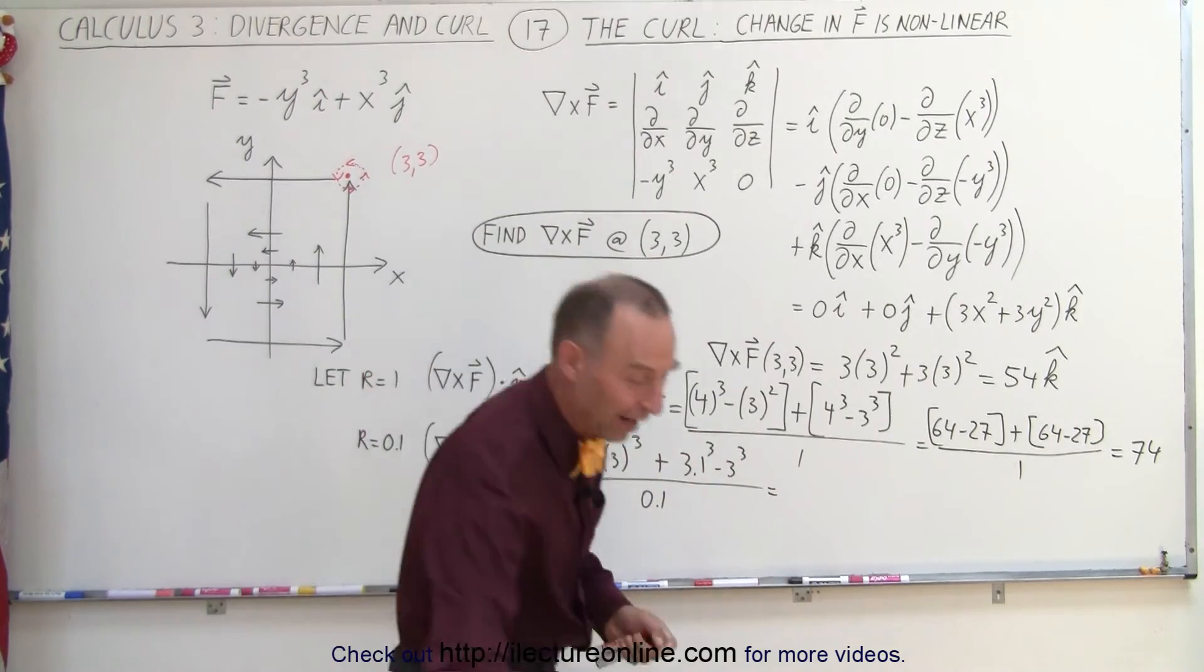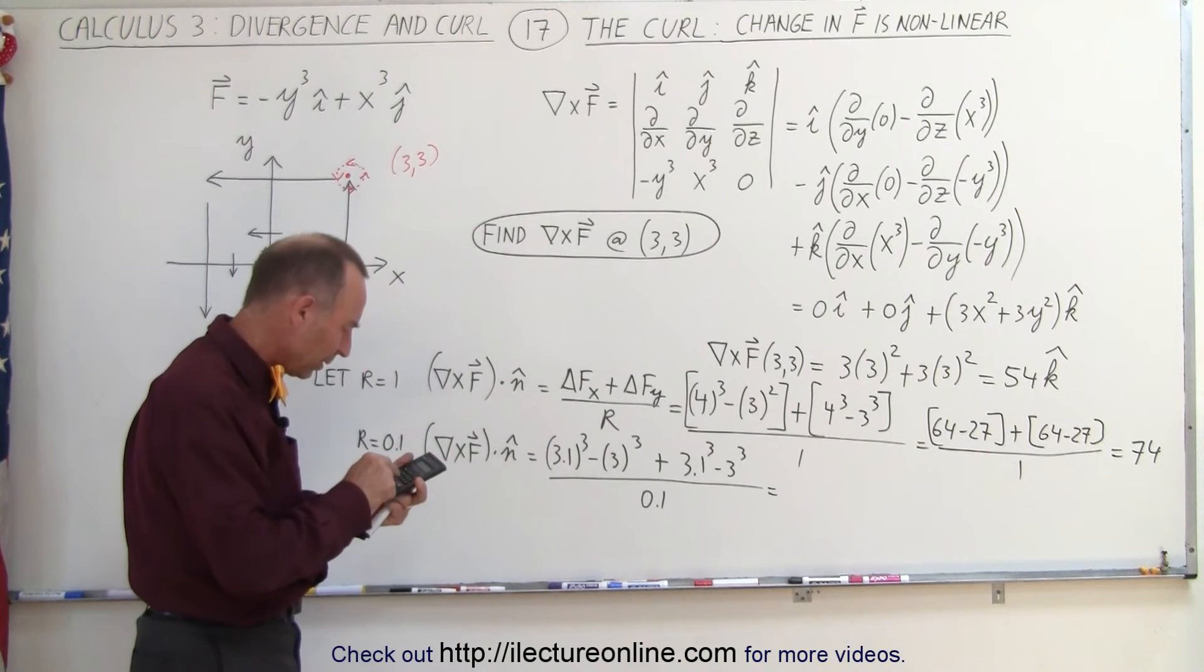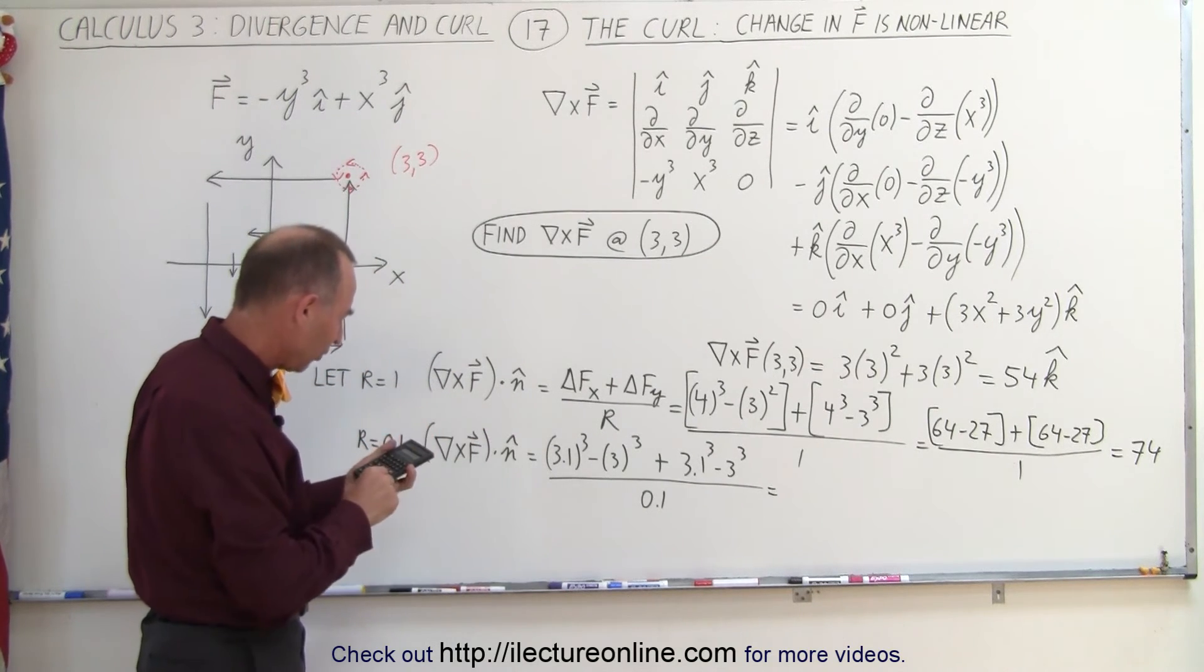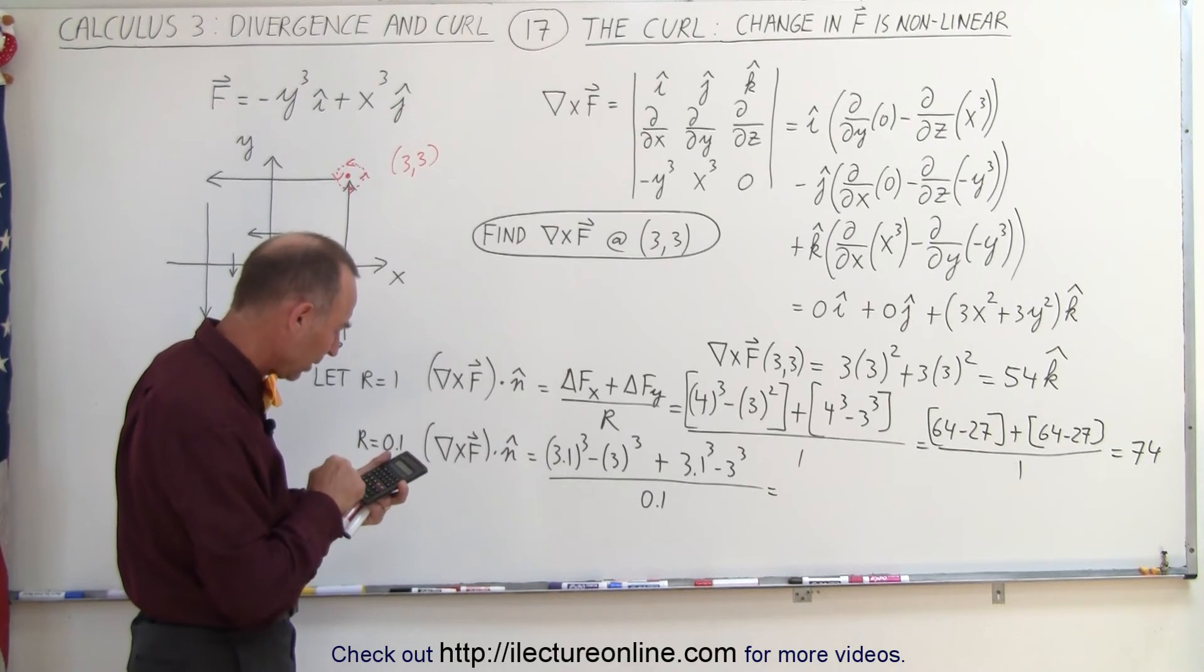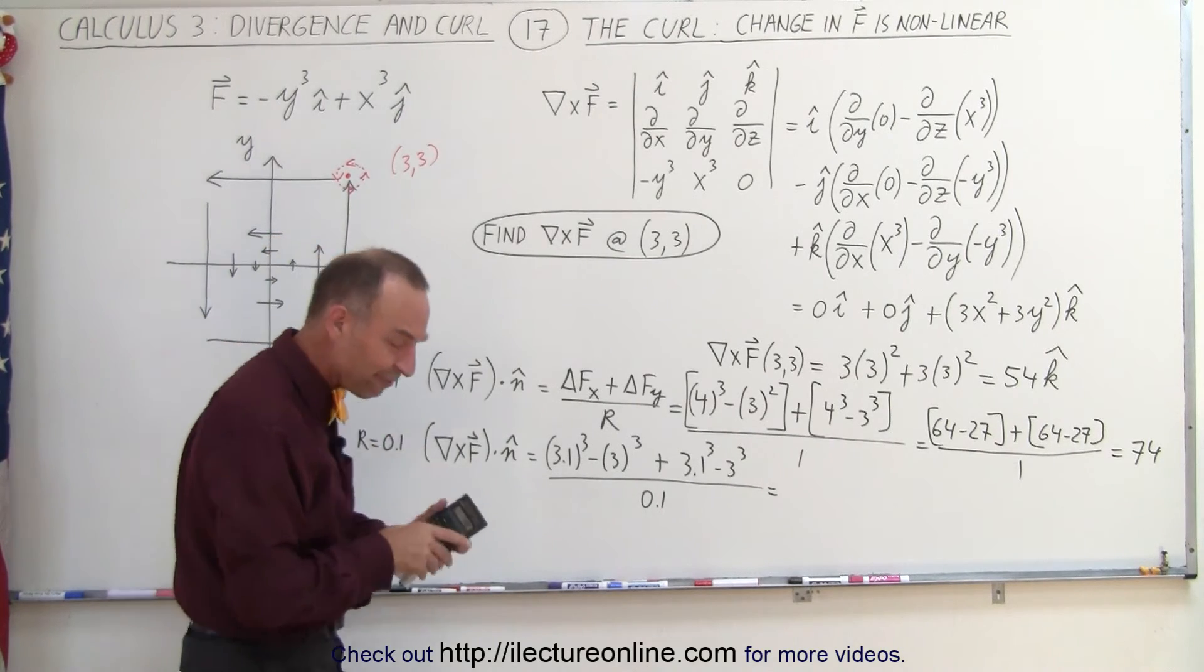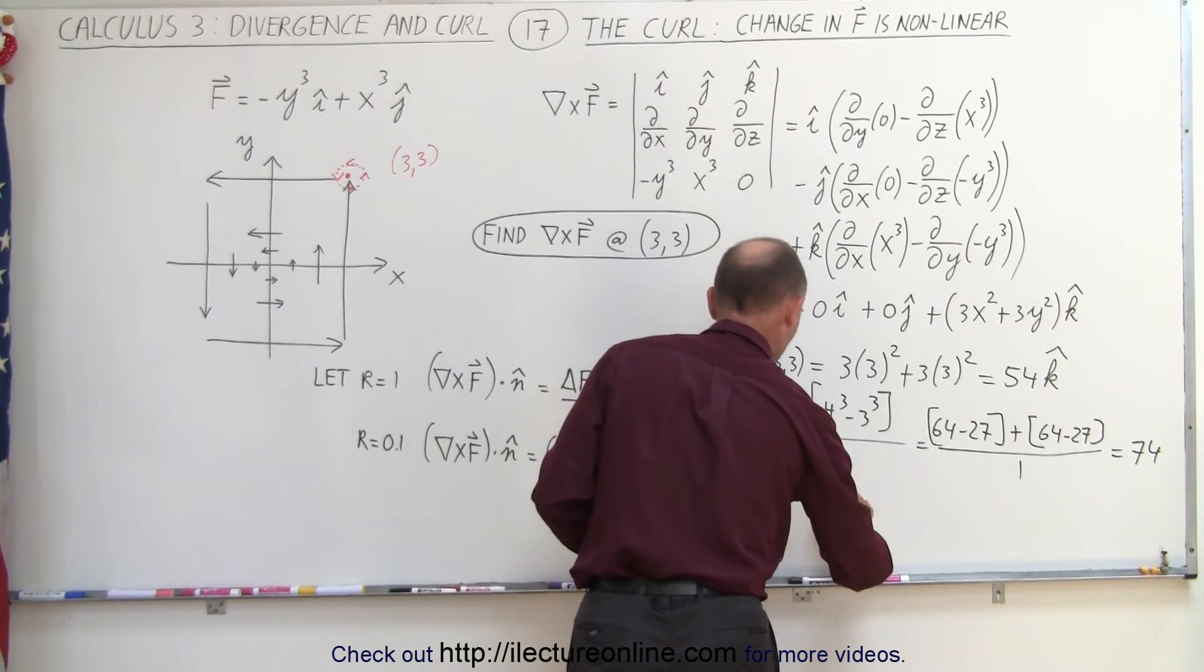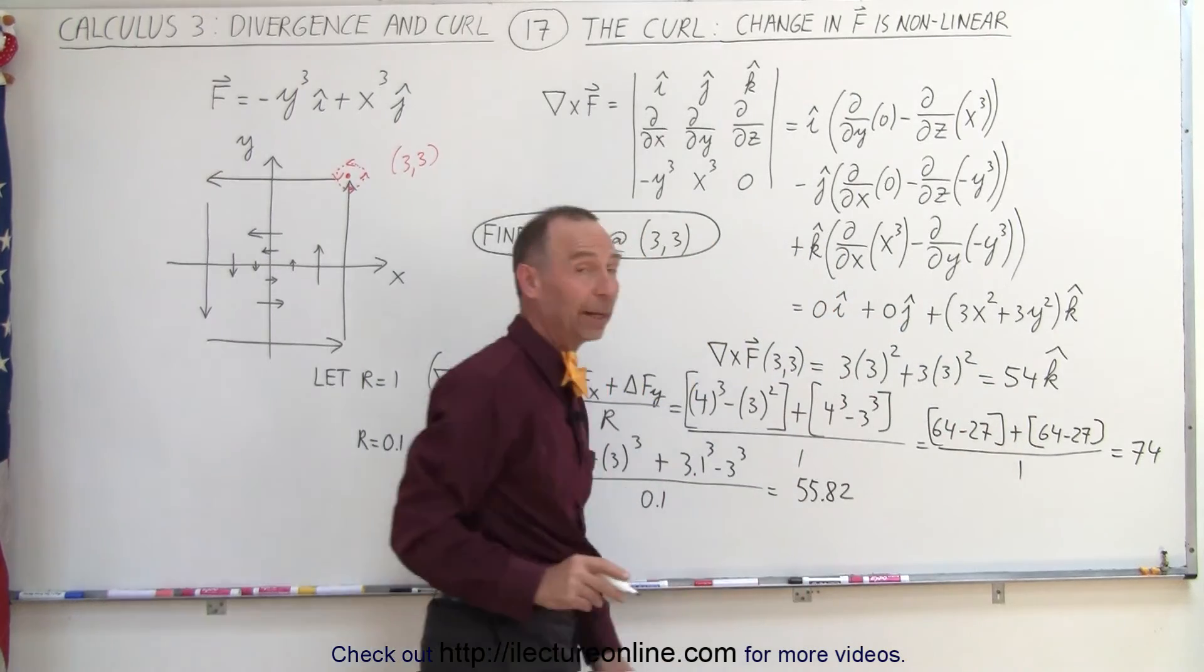So now, of course, I'm going to need a calculator. So 3.1, and I cube that, and I subtract from that 27, so minus 27, and I do it twice, so times 2, and then I divide that by 0.1, and I get 55.82. 55.82, which is much closer to the 54 that I was expecting.